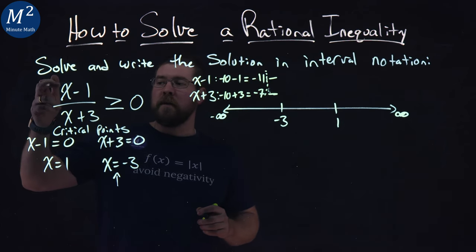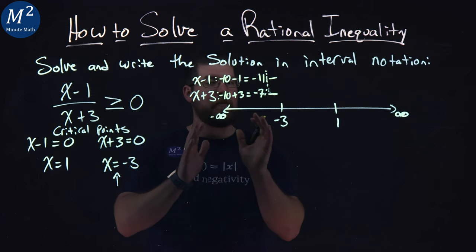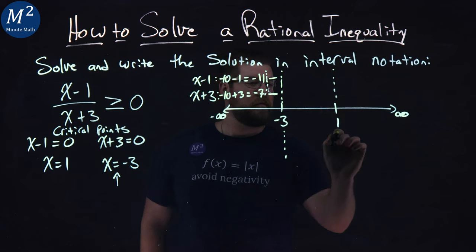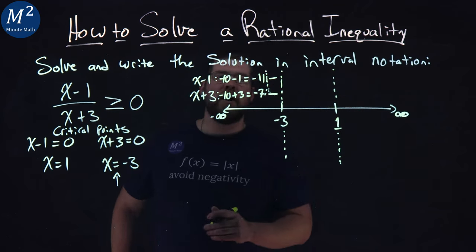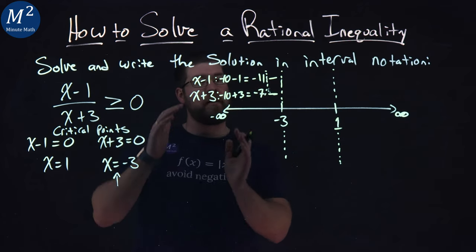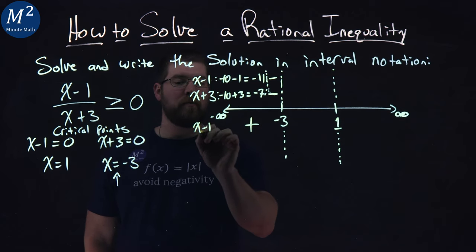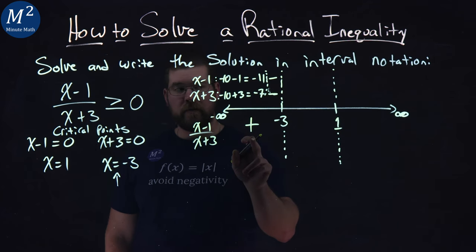We know we have a negative divided by a negative for whatever number that's in this range here. The critical values kind of give us our range. We have a negative divided by a negative, and every single number within that range is going to be positive. This is our x minus 1 over x plus 3. Within that range, a negative divided by a negative is going to be positive.